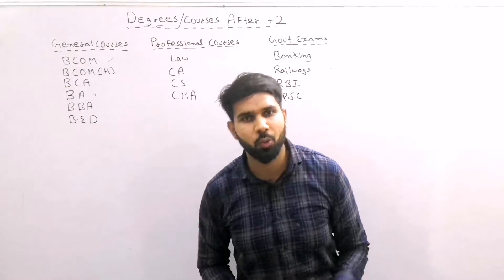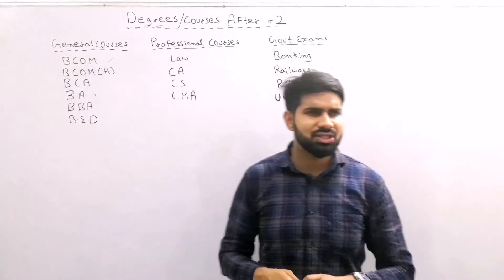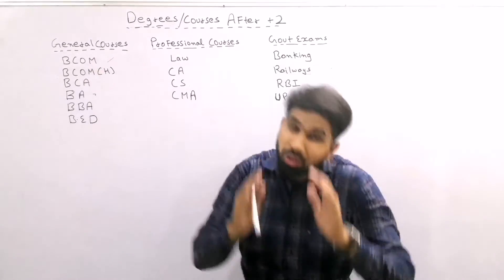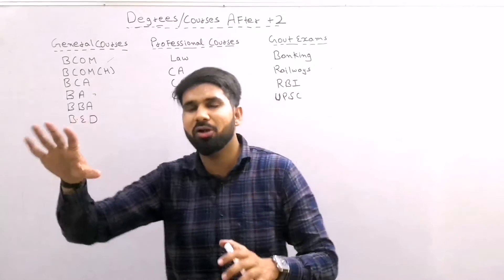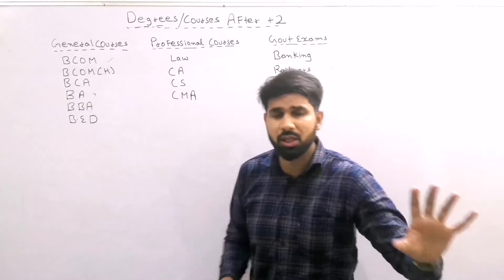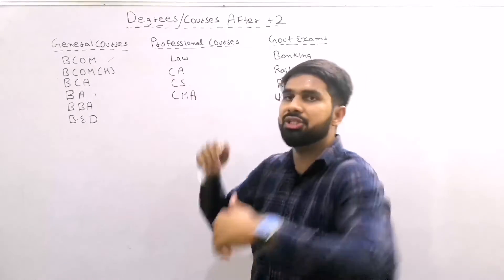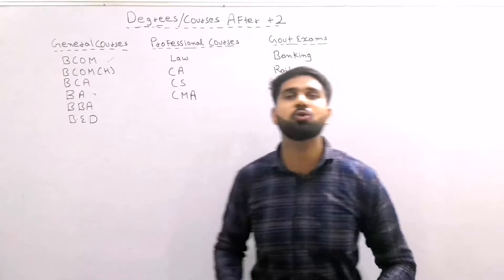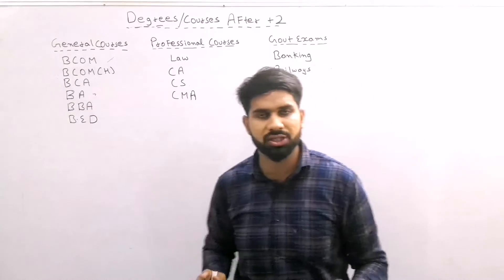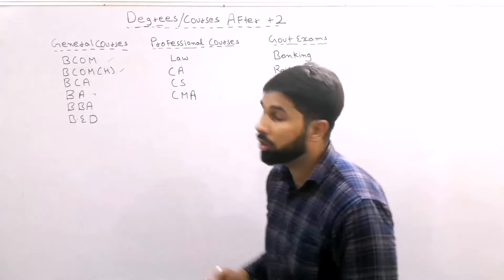First we have BCom — Bachelor of Commerce. After passing the exam, if a kid is going to a good college, go for a good college for BCom. In normal colleges, if you do BCom, there is no scope. In this video I won't tell you about scope specifically — it is your line, your mind that matters. I will mention teaching line, CA line, CS line, but ultimately the choice is yours.